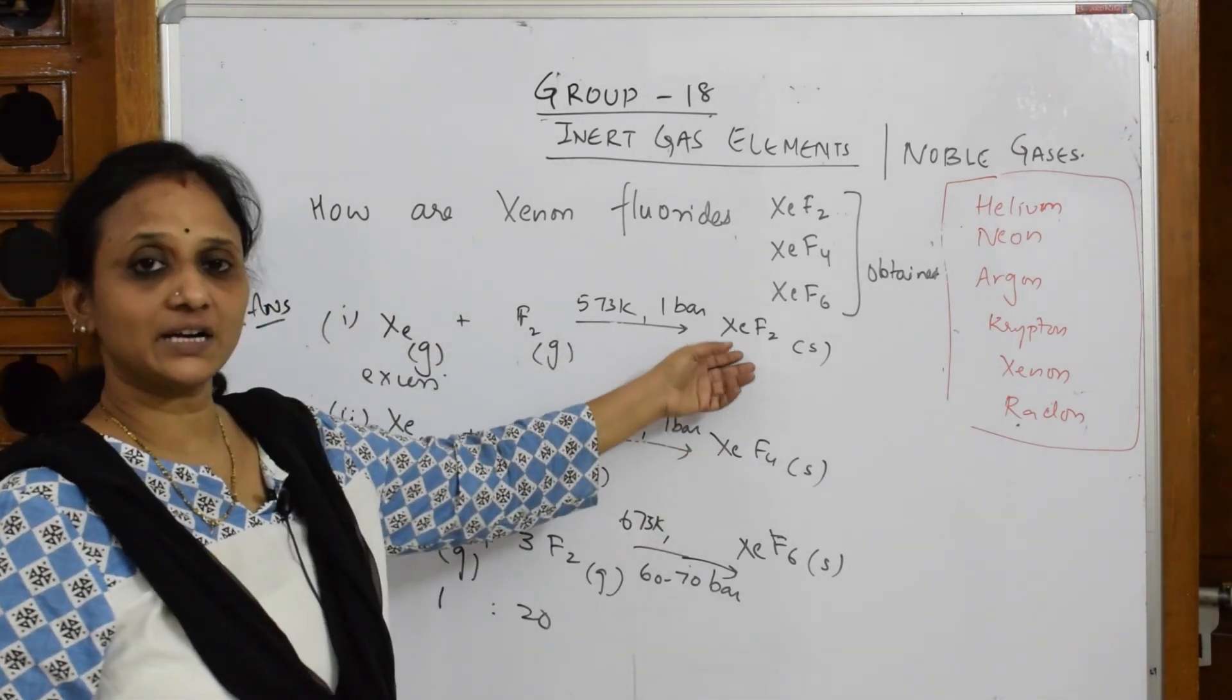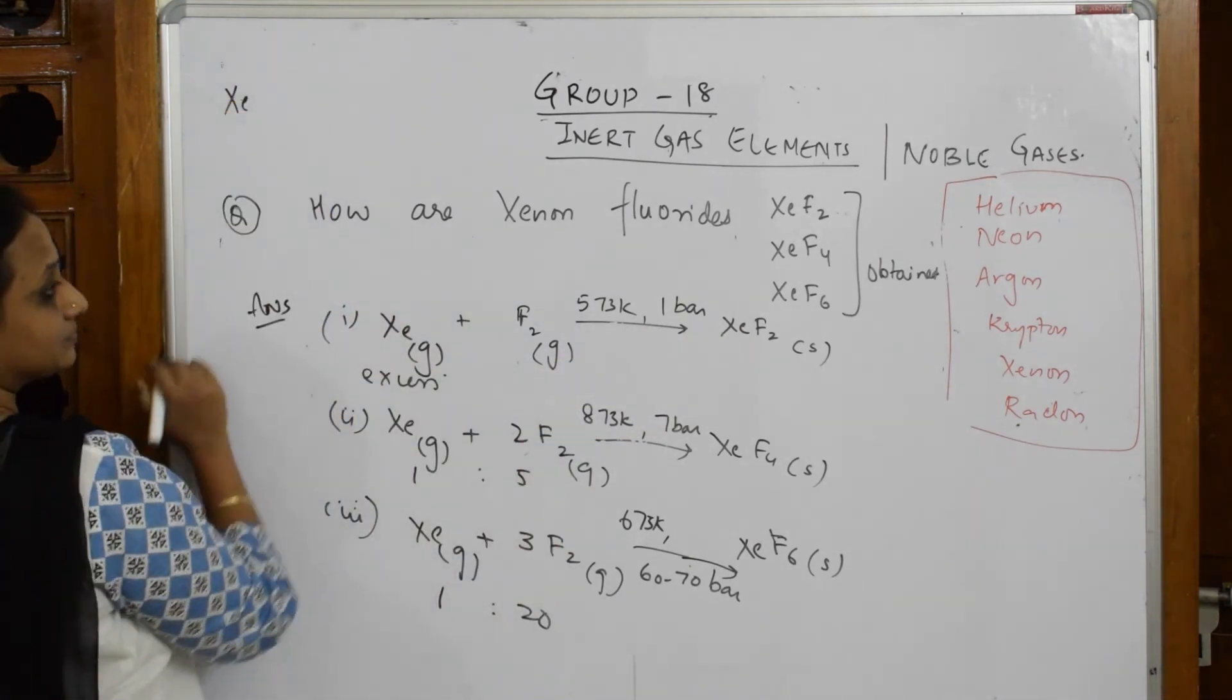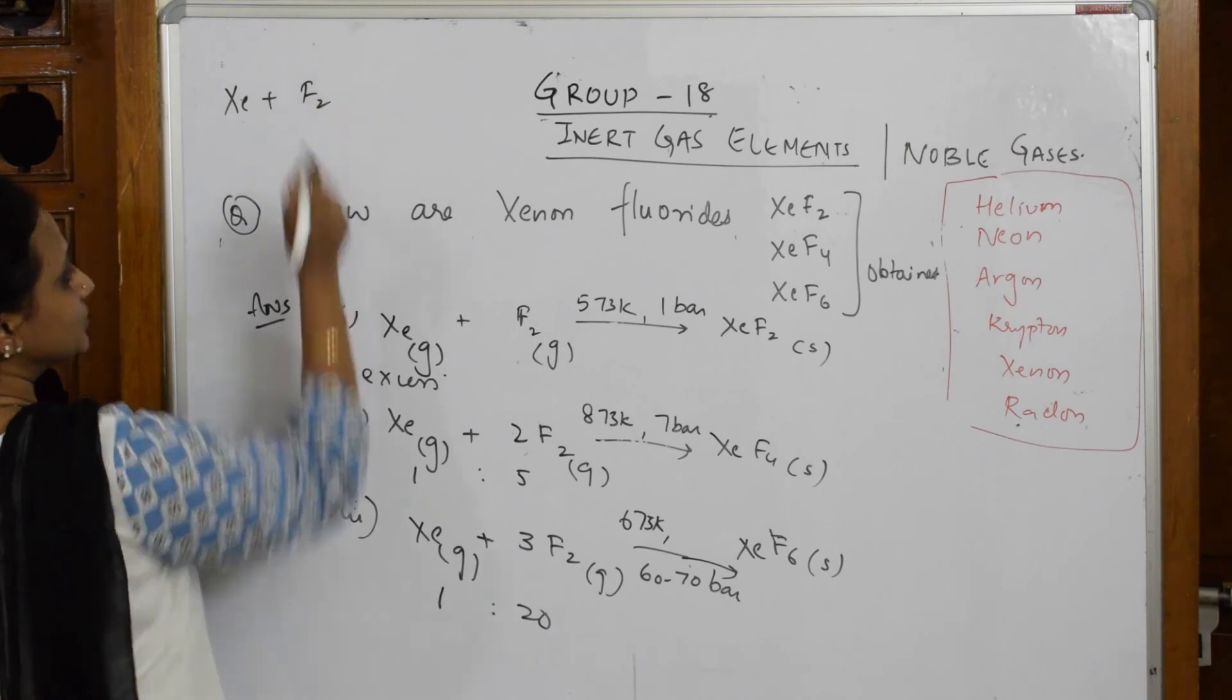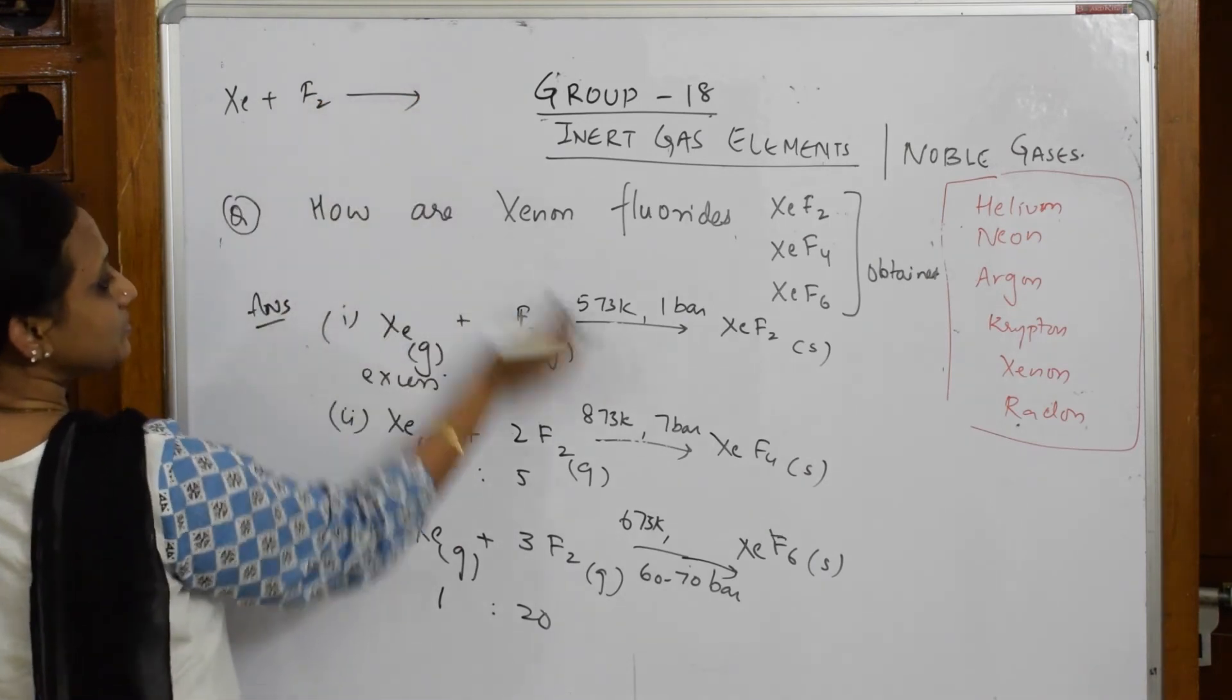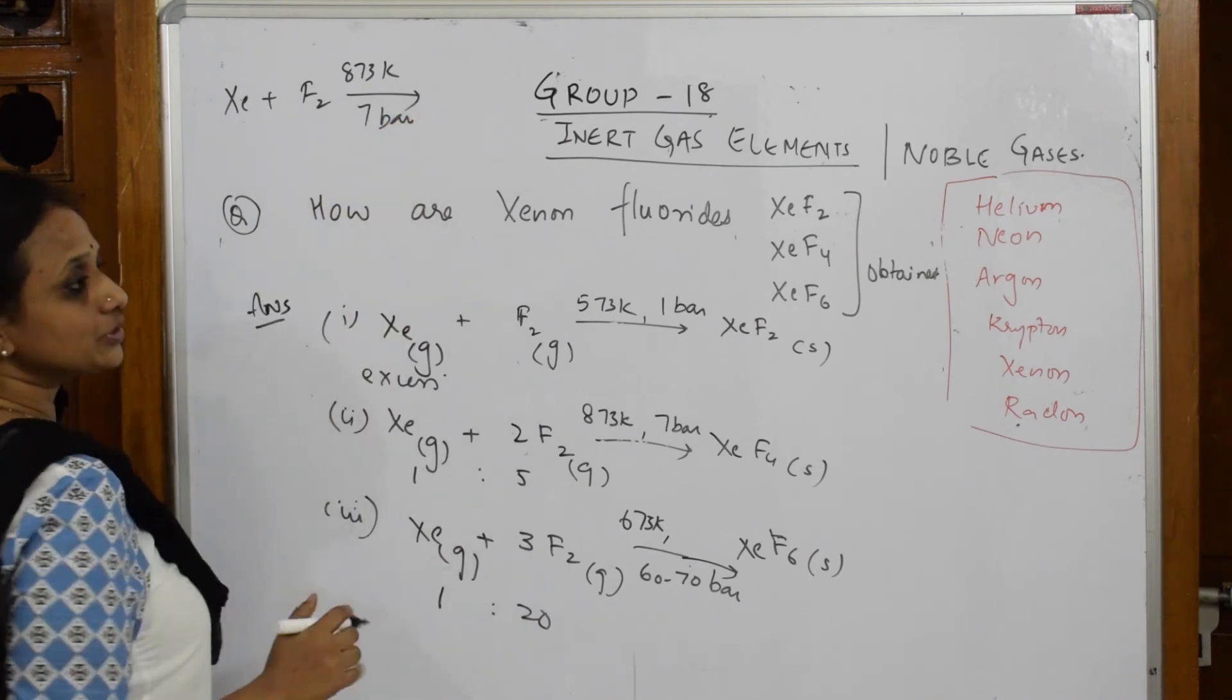For example, suppose if I give you Xe plus F2, nothing balanced. They've given me here 873 Kelvin and 7 bar pressure. So immediately what should you do? You have to see, okay, 873 Kelvin, and the product which I am going to prepare is XeF4.